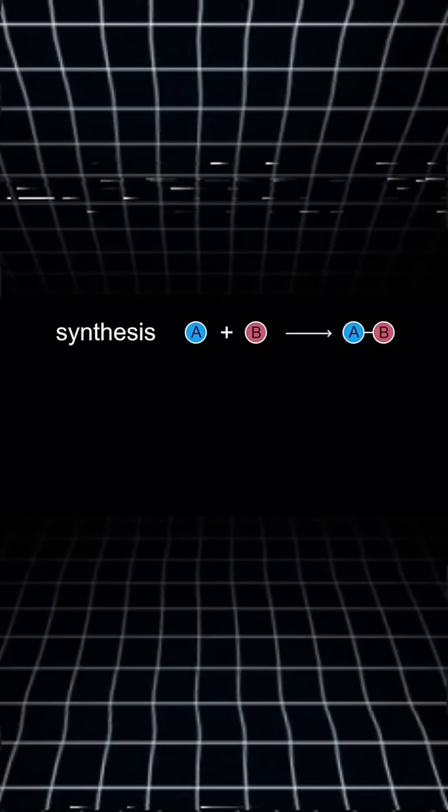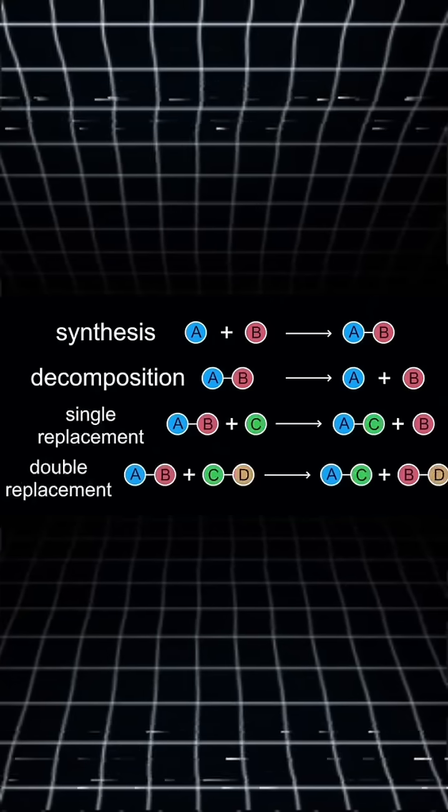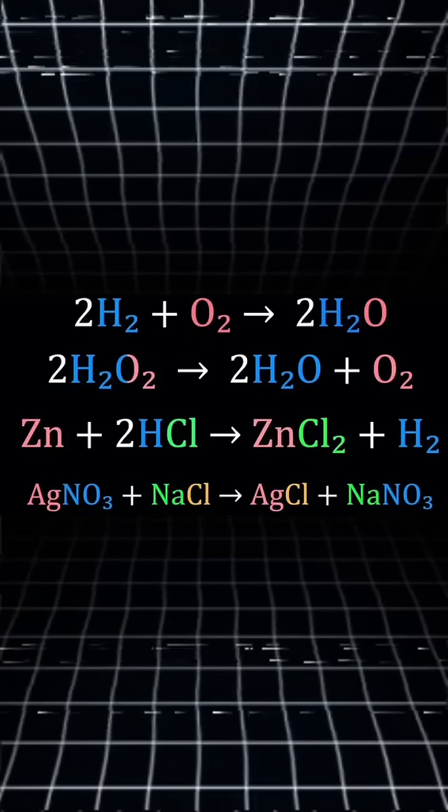There's a couple types of chemical reactions: synthesis, decomposition, single replacement, and double replacement. Here's an example for each one.